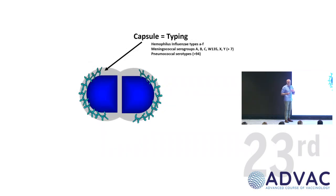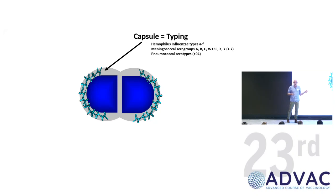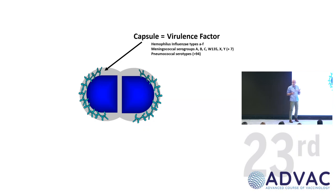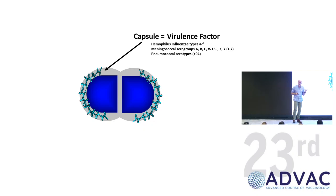What we use the capsule most for is typing. There are subtle differences in the structure of the capsule between different Haemophilus types, between the different meningococcal types, and between now probably a hundred pneumococcal serotypes. We can type these pathogens according to capsule structure and raise antibodies in rabbits. There are also non-typeable Haemophilus that don't have a capsule, and they don't tend to cause major problems in human health because they are susceptible to killing, unless you have bad lungs or ear problems causing otitis media. In general, if you don't have a capsule, you don't survive.